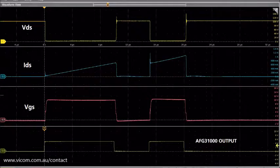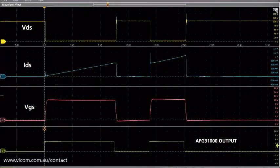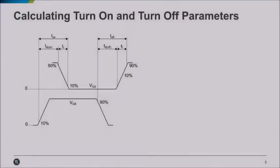The overshoot seen on IDS is due to the reverse recovery properties of the freewheeling diode. To calculate the turn on and turn off parameters, we compare the falling edge of the first pulse and the rising edge of the second pulse.